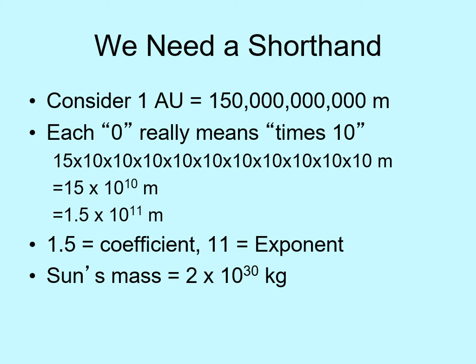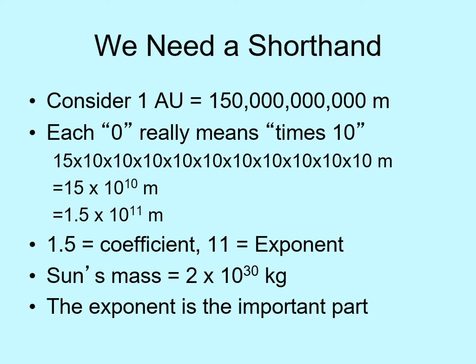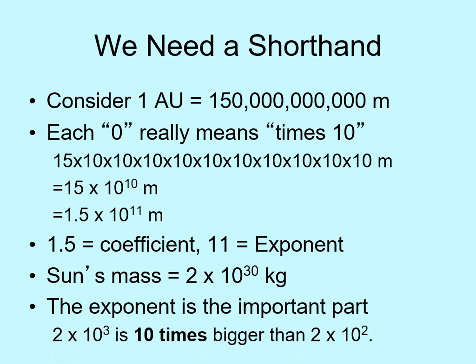There's another thing I'd like you to understand about numbers like this: the exponent is the important part of the number. Compare 2 times 10 squared, which is 200, with 2 times 10 to the 3rd, which is 2,000. We've just changed the exponent by 1, but the number gets 10 times bigger. So when you're working with numbers in this course, it's really important that you get the exponent right. Getting the coefficient right is good also, but even a small problem with the exponent means your answer is way off.